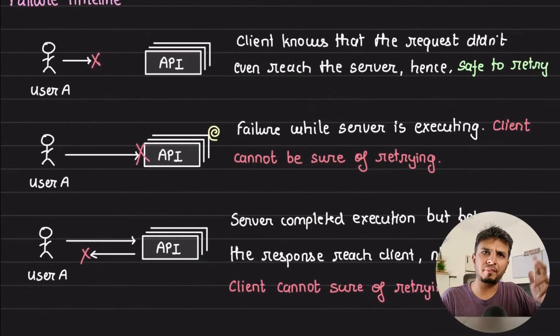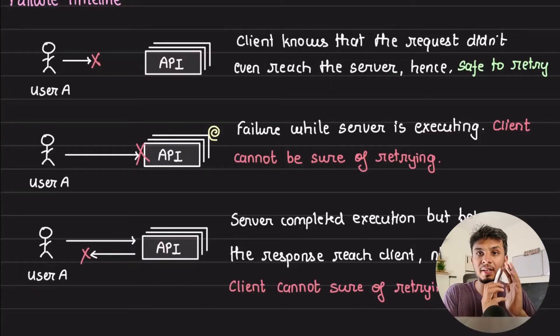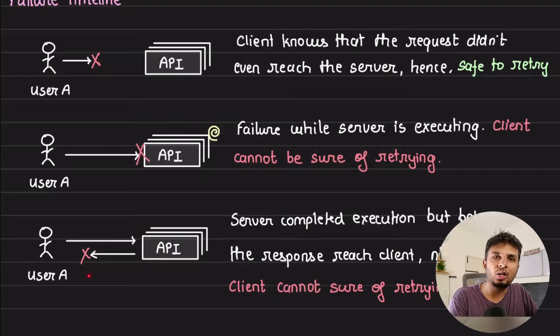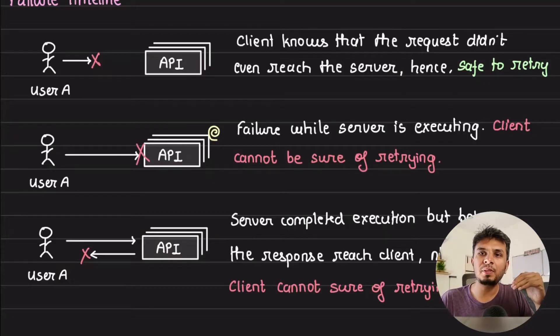Now if you retry you don't know what kind of implications it would have. Third case is where the request went to the server, server did its entire computation and processing, and while it was about to send the response the network became unreliable or crashed. In this case again your client doesn't know that the processing was done although your server did the processing. So given the three possible places where the error could have occurred, retrying or automatic retrying is subjective.